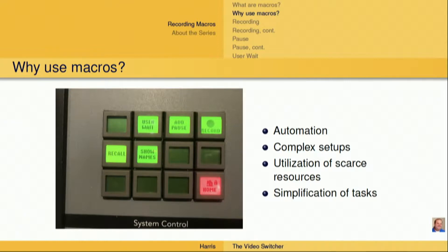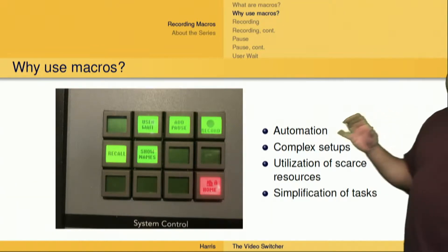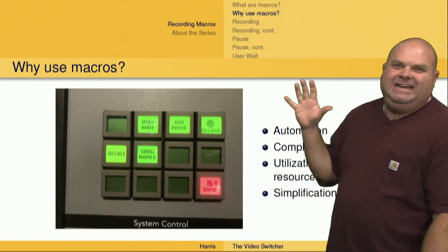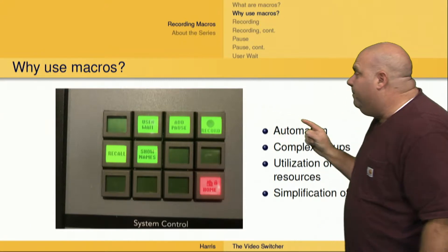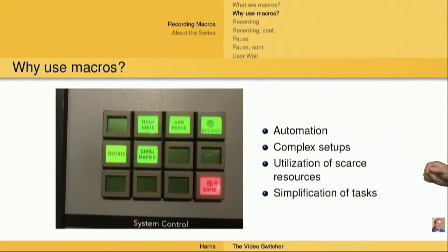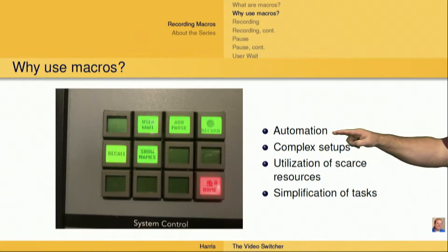We want to use these macros for very nice things, like automation. We can record a series of steps and then have the switcher perform those steps at any time. That allows us to automate specific tasks, like, for example, setting up a key.